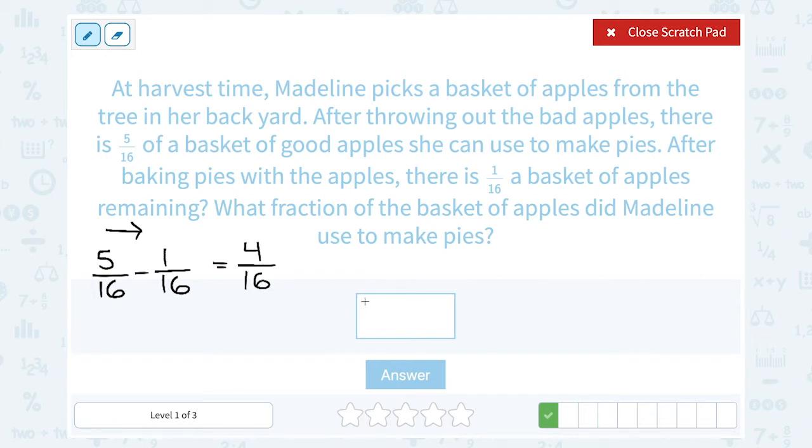Now this is my answer, but I think I can simplify that a little bit because I'm noticing that 4 goes into both 4 and 16. So I could write 4 as 4 times 1, and I could write 16 as 4 times 4. And that just shows me that I could cancel out a factor of 4 on the top and the bottom, and 4/16 has the same value as 1/4. So she used 1/4, a basket of apples.